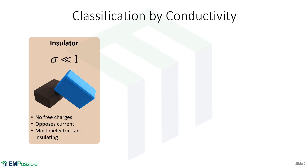In these insulators there are really no free charges, and if we try to apply an electric current to them or get an electric current to flow, they will oppose that. Usually when somebody says dielectric, they really mean something that is insulating. In electromagnetics, dielectric means even a little bit more — it probably means there's also no permeability — but usually in practice when somebody says dielectric they just mean insulating.